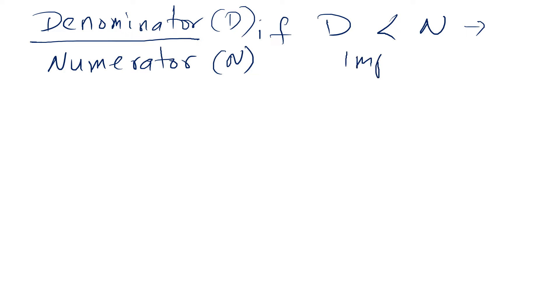And of course, the top number is called the denominator, or it may not be a number, it could be an expression or something. So let's write it this way, denominator, and this is divided by numerator. And if this denominator is less than numerator, then this is an improper fraction.